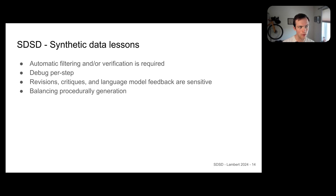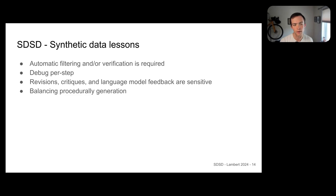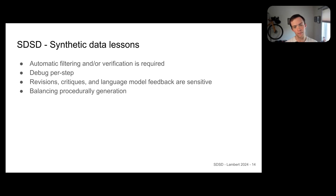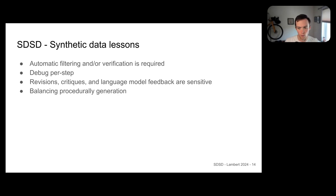Revisions, critiques, and language model feedback are sensitive — this falls into the whole LLM-as-a-judge problem, and we know there are serious limitations there. The final lesson is that if you're doing procedural generation from sets of topics and principles, the data becomes extremely unbalanced. We have a distribution of topics that focuses heavily on fruit — about 15% of conversations have some fruit-related topic, which is not representative. Some principles are naturally easier to violate and generate revision data on, but that doesn't mean they're more important. If you want every principle represented, you may need to do more sampling to even out your fine-tuning data set before RLHF.